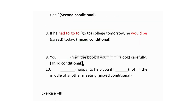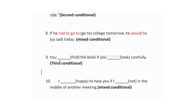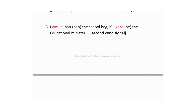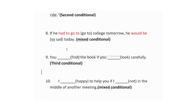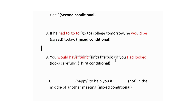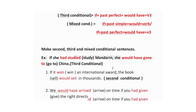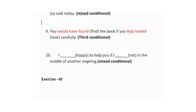The ninth one is: 'You dash find the book if you dash look carefully.' You have to add third conditional. Structure: if + past perfect + would have + V3. Main clause first: 'You would have found the book' — 'find' becomes 'found' (V3). Then if clause: 'if you had looked carefully.' Full sentence: 'You would have found the book if you had looked carefully.'